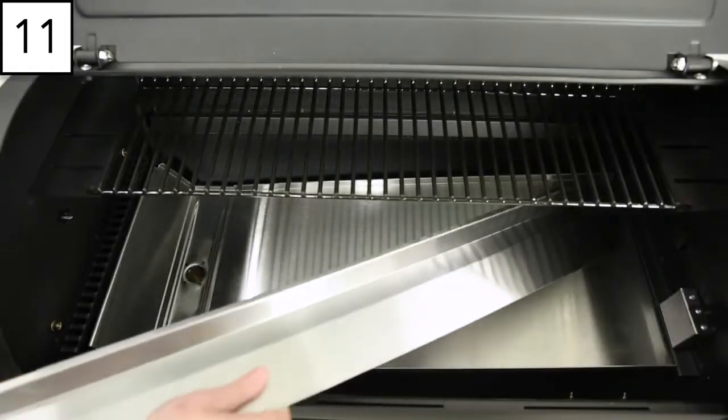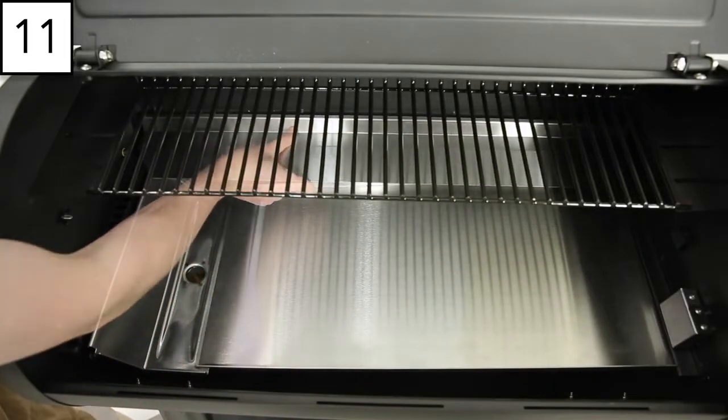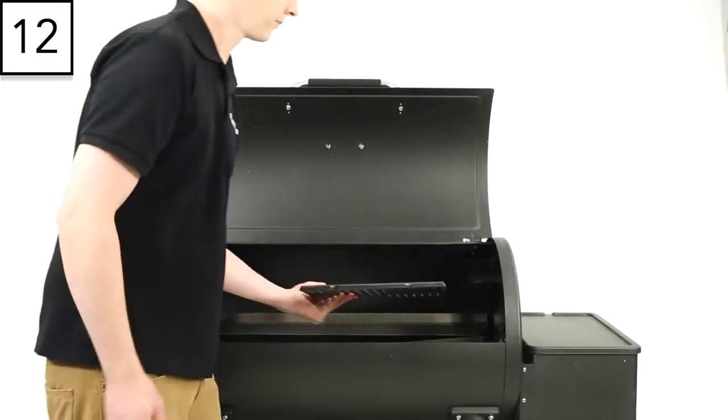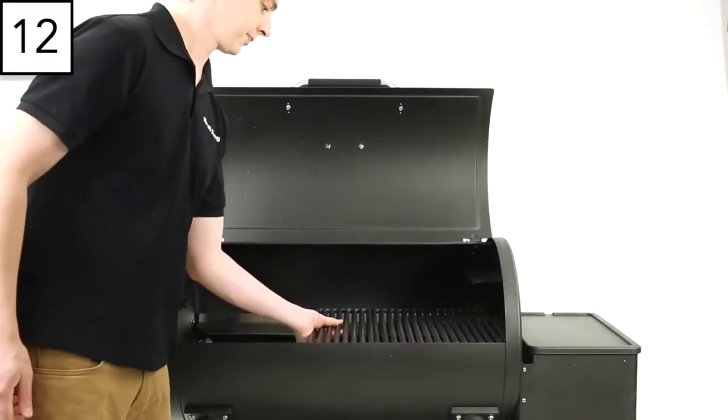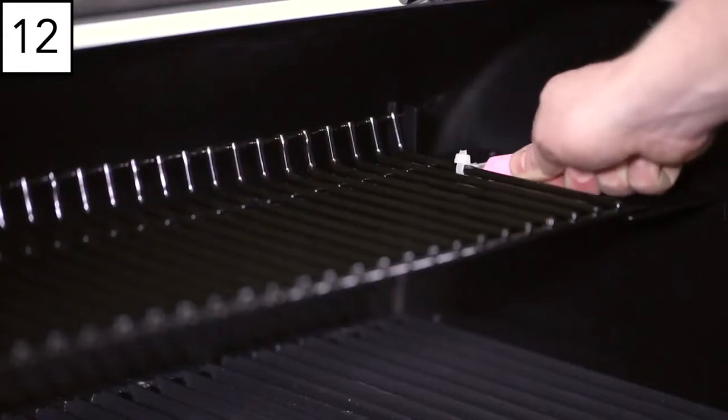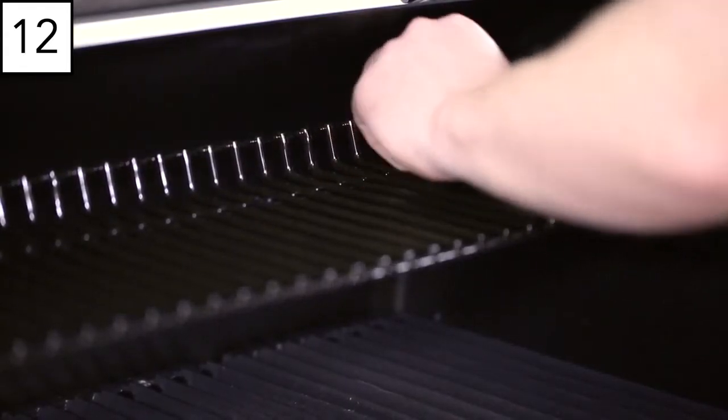Step 11. Insert both grease tray guide plates, one at the back and one at the front. Step 12. Insert the cooking grips. Cut off the plastic zip ties holding the warming rack in place.